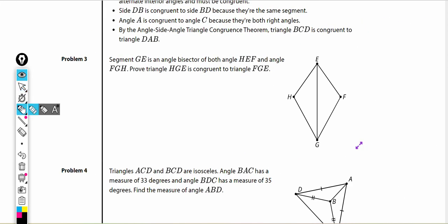Problem three. Segment GE is an angle bisector of both angle HEF and angle FGH. Prove triangle HGE is congruent to triangle FGE. GE bisects HEF. Bisect means to split into two equal pieces. We know that the big angle HEF was split into two equal pieces. HEG is congruent to angle GEF because angle bisectors create congruent angles. It also bisects FGH, which tells me these two angles are going to be congruent because of our angle bisector.